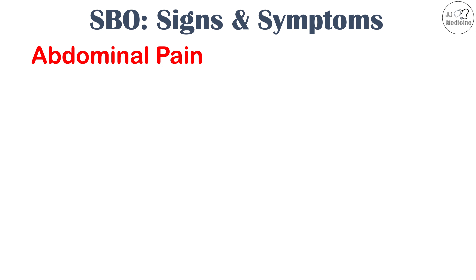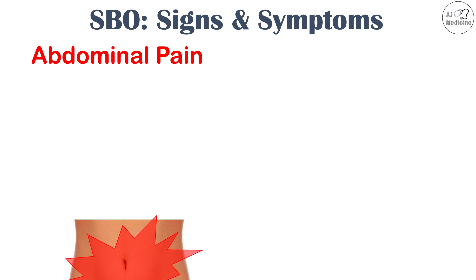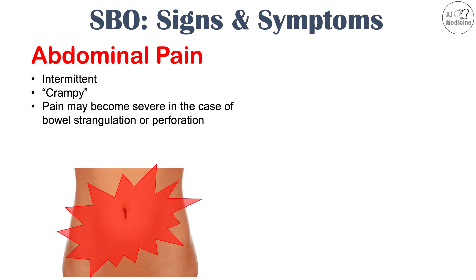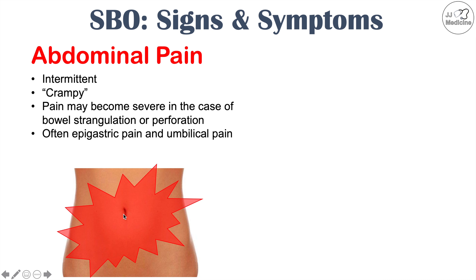One of the main symptoms of a small bowel obstruction is abdominal pain. This pain is considered to be intermittent and crampy in nature. The pain may become severe in the case of bowel strangulation or perforation, where it can intensify rather quickly. The pain often occurs in the epigastric area — the middle of your abdomen above the belly button — and there can also be umbilical pain around the belly button. Those are the two common areas where we see pain in a small bowel obstruction.